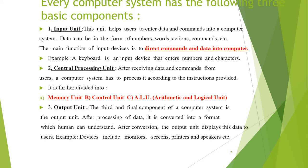The third basic component is the Output Unit. It gives meaningful results after processing the input instructions. After processing, the data is converted into a format which humans can understand — a human-readable form. The output unit then displays this data to users. Devices like monitors, screens, printers, and speakers are known as output devices, as the information can be directly seen on them.